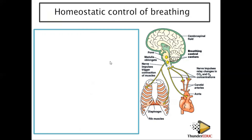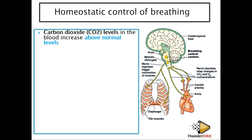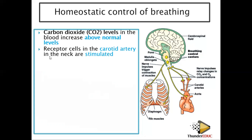Lastly, the homeostatic control of breathing — how gases are kept in balance without too much or too little. In most cases we talk about carbon dioxide, which is not needed in excess in the body. We have receptors which detect this and ensure carbon dioxide is removed. When carbon dioxide levels in the blood rise above normal, receptor cells in the carotid artery in the neck are stimulated. The blood becomes acidic, and the carotid artery sends an impulse to the brain.